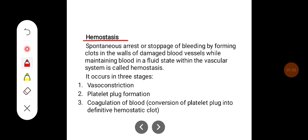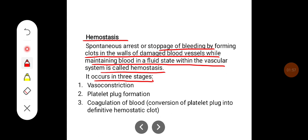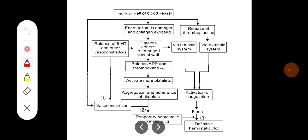Hemostasis is the spontaneous arrest or stoppage of bleeding by forming clots in the walls of damaged vessels while maintaining blood in a fluid state within the vascular system. It occurs in three stages: the first stage is vasoconstriction, the second is platelet plug formation, and the third is coagulation of the blood — that is, conversion of the platelet plug into the definitive hemostatic clot.